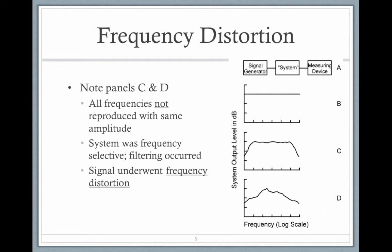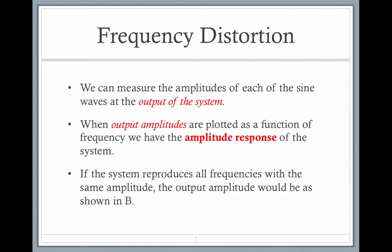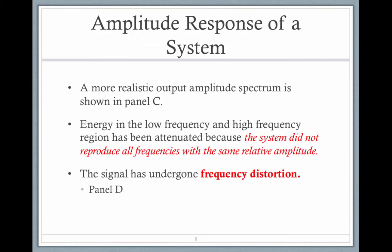In C and D, all the frequencies are not produced with the same amplitude. The system is frequency selective, and filtering occurred. The signal underwent frequency distortion. It's not that nice straight sound that I had produced. The output of the system is different from the input of the system, and we can see that we have frequency distortion.